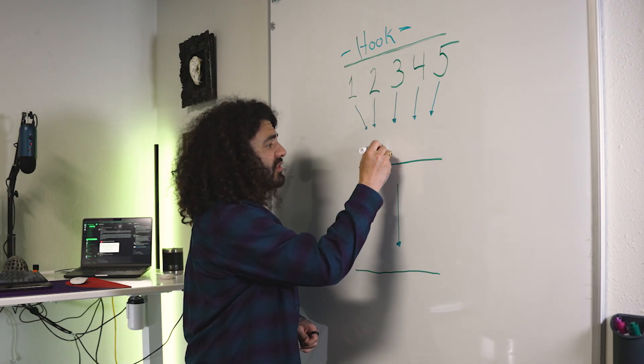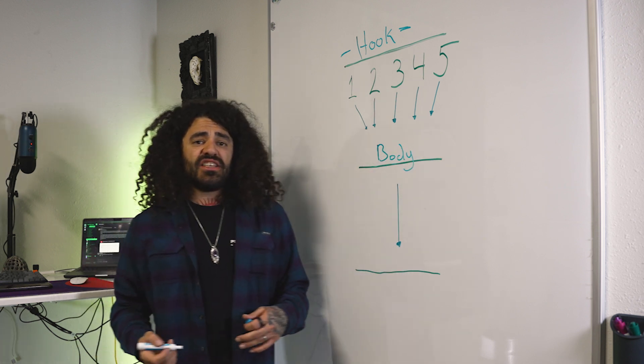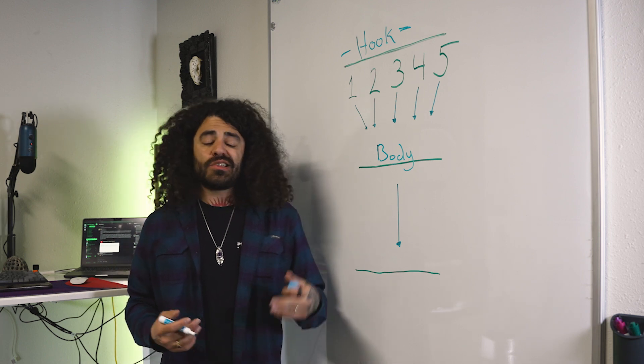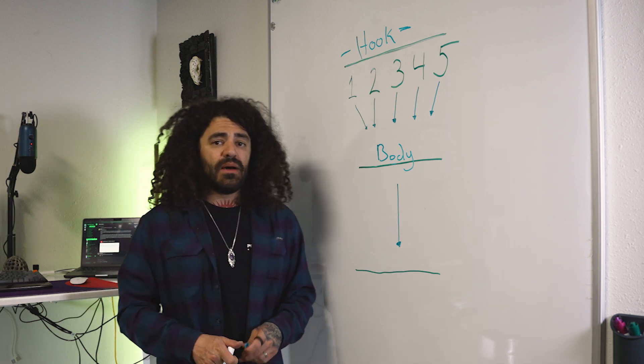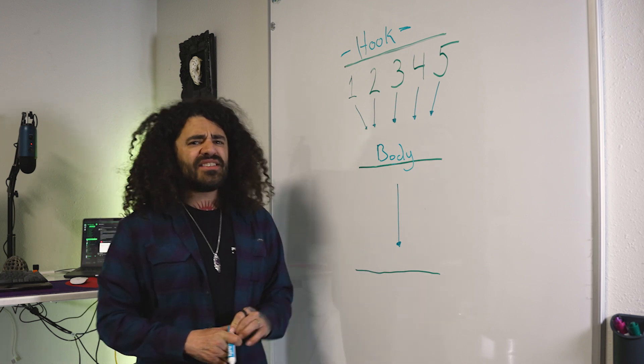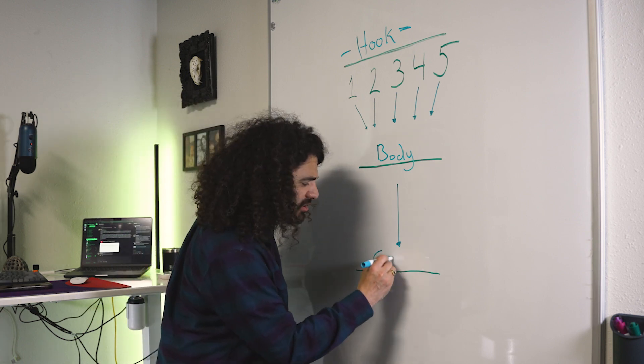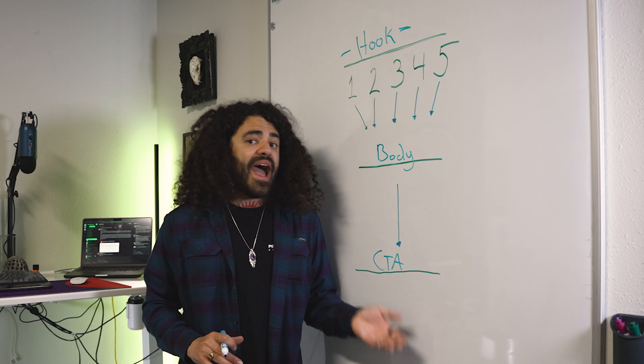Then we get to the body. The body of the ad is essentially the education part. So if you start off with a hook saying I'm going to show you how so-and-so got this result in this many days using this simple system, that is where you start to describe the system. This system has three components: a hook, a body, and a call to action. That's the final part of your ad.